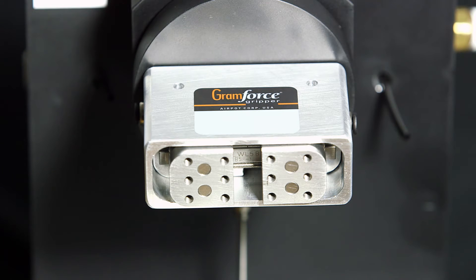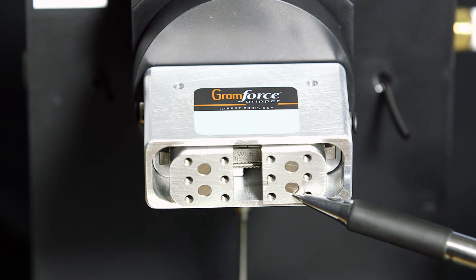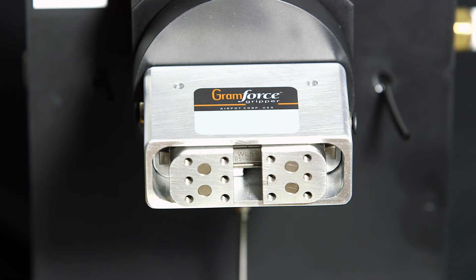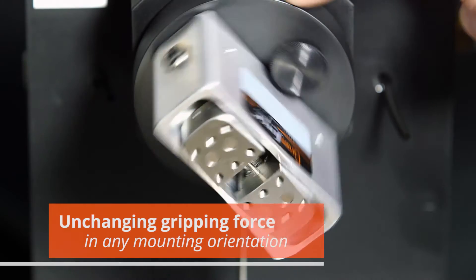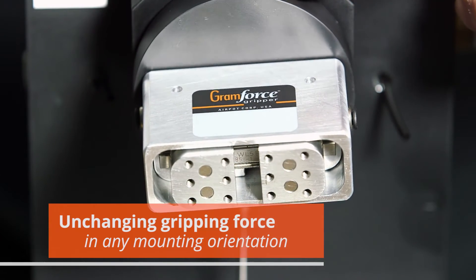Each finger mounting block is provided with six threaded holes for versatile mounting of your own finger design. The mounting blocks are also counterbalanced, which allows the gripper to be positioned in any orientation without affecting the clamping force.